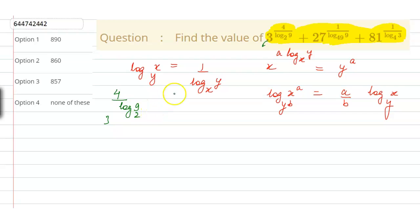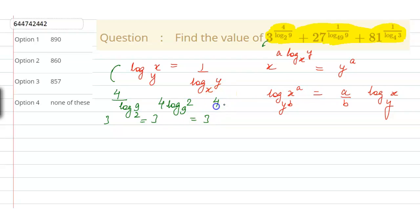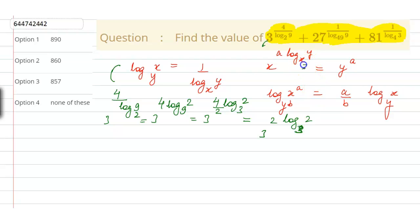We apply the first property, so this becomes 3 to the power 4 into log of 2 to the base 9. Then applying the third property, this becomes 3 to the power 4 and log of 2 base 3, with the 2 coming to the front giving 4 upon 2. So this simplifies to 3 to the power 2 into log 2 base 3. Applying the second property, this is equivalent to 2 to the power 2, which equals 4.